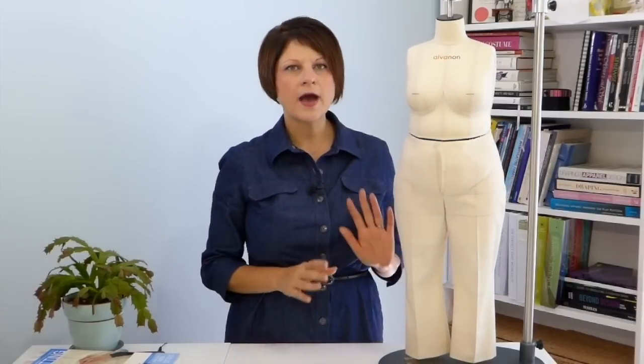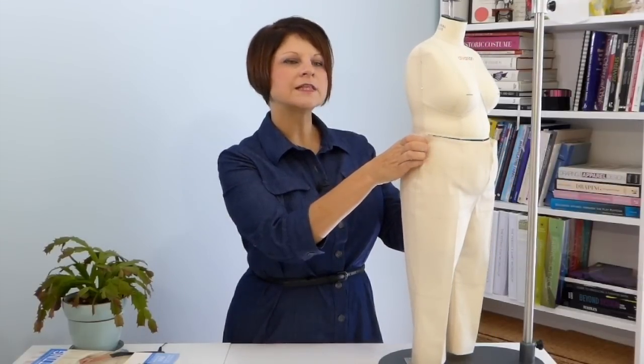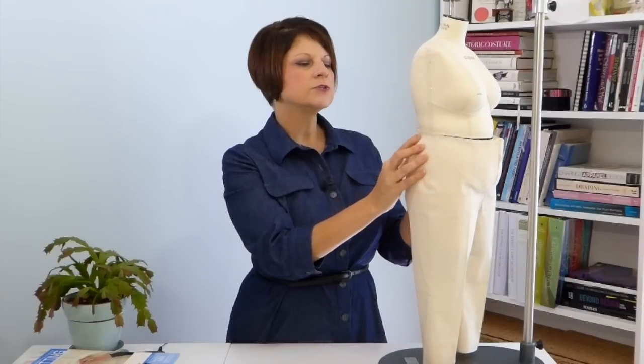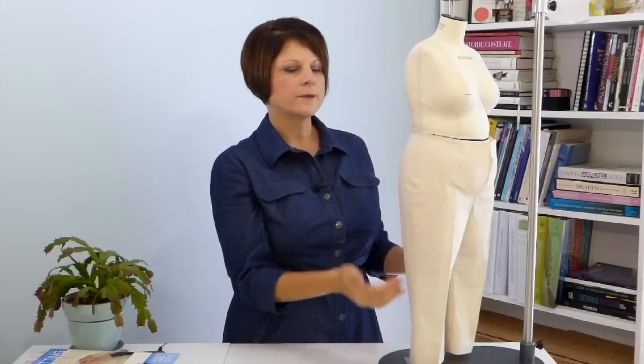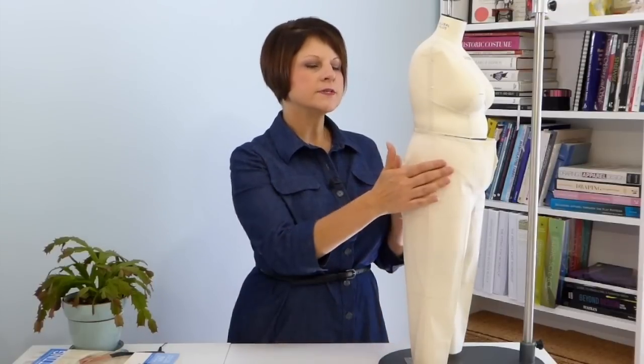The next step is to determine how much of an adjustment you need to make, and that's pretty easy to determine, at least to guess anyway. So what I'd like you to do is undo your center front opening, and let your pants relax toward the back and allow the front to open. You want to line up your side seam line so that it appears to be hanging perpendicular to the floor. This is automatically going to open the center front opening, and there's going to be a gap at center front.